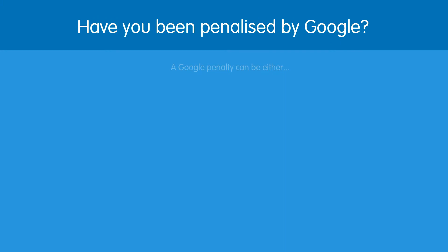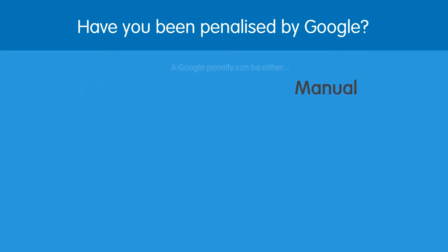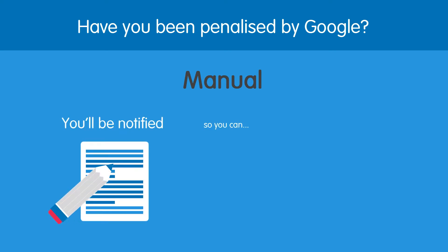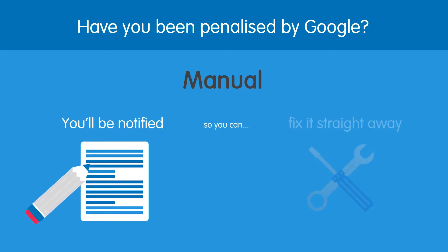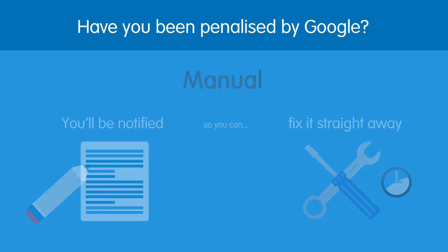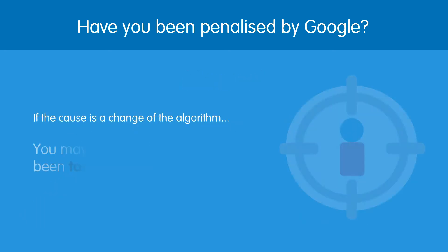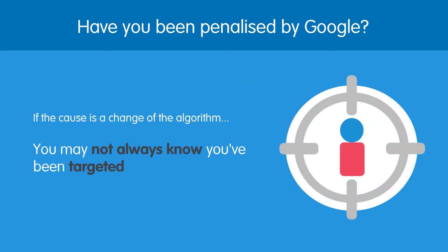A Google penalty can be either automatic or manual. With manual penalties, you'll probably be notified that you've been doing something wrong that needs to be fixed as soon as possible. However, if the cause is a change of the algorithm, you may not always know that you've been targeted.